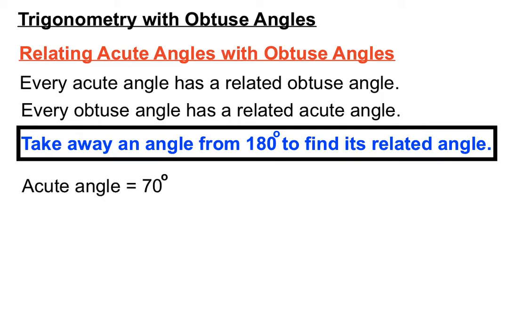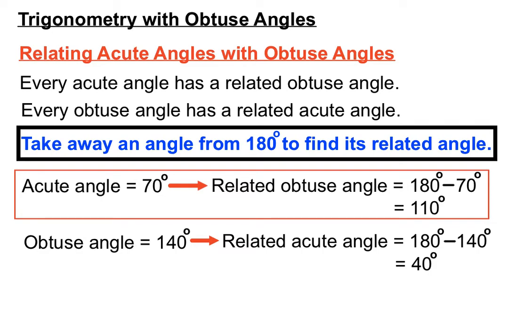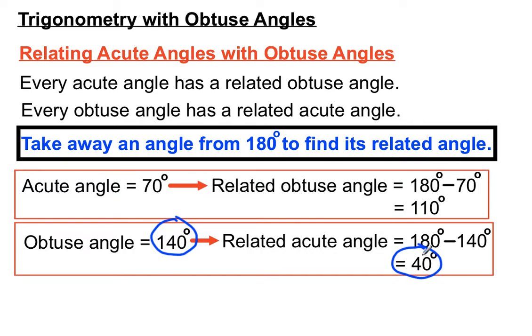As a couple of examples, if we have an acute angle of 70 degrees, we can find the equivalent obtuse angle to that size angle by taking away from 180 degrees. So we would say that 70 degrees is very closely related to 110 degrees. An obtuse angle of 140 degrees, we can find its related or its equivalent acute angle by taking it away from 180 degrees. So we get 40 degrees there. So any time we've got any angle really that's acute or obtuse, we can find the equivalent opposite style angle by taking it away from 180.